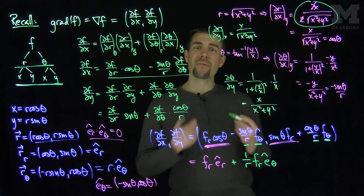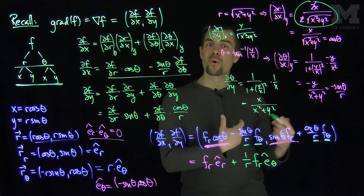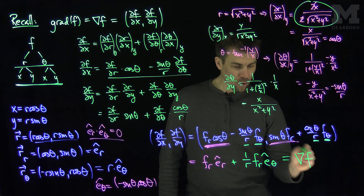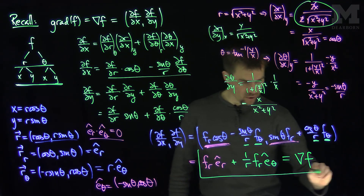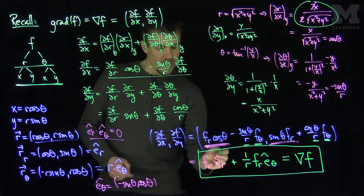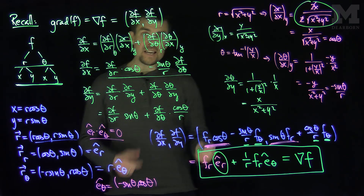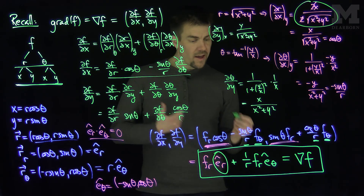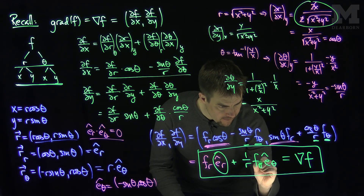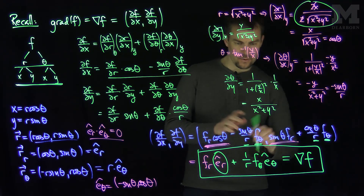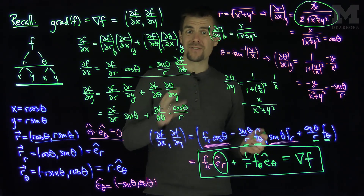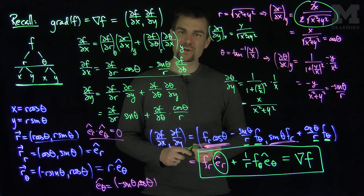So we have found the gradient in polar coordinates: ∇f = (∂f/∂r) ê_r + (1/r)(∂f/∂θ) ê_θ. The gradient is the partial derivative of f with respect to r in the ê_r direction, plus one over r times the partial derivative of f with respect to θ in the ê_θ direction. Thank you very much.